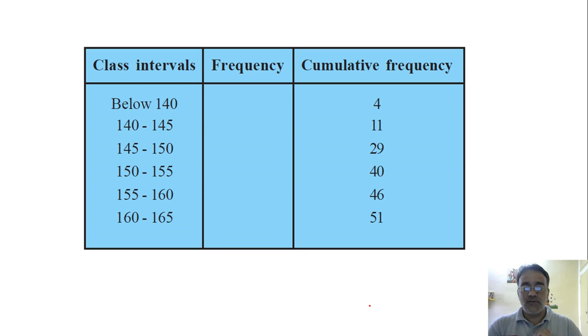First of all, in order to solve those questions we require frequency. So a frequency distribution table, the normal one, and cumulative frequency is already given in the question. So the class size will be 5 and the first class interval will be below 140.